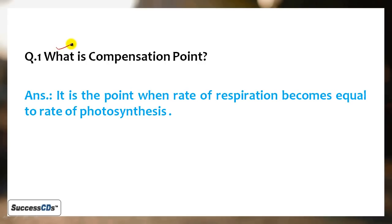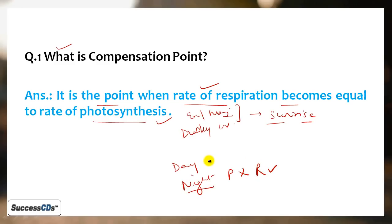First question: What is compensation point? It is the point when rate of respiration becomes equal to rate of photosynthesis. This occurs during dusk in evenings or early mornings during sunrise. At night, plants don't do photosynthesis, they respire. During day, plants photosynthesize, not respire. At the point when day changes to night or night changes to day, photosynthesis and respiration rates become equal. No gas is released outside.